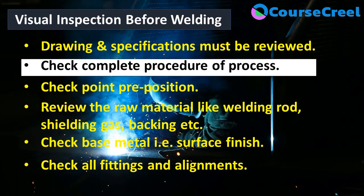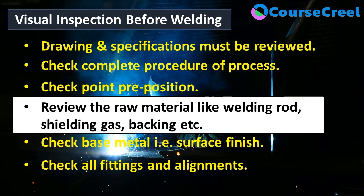The second step is to check the complete procedure of the welding process — what kind of welding process we are going to perform and what steps are necessary, such as gas tungsten arc welding (GTAW), gas metal arc welding (GMAW), or shielded metal arc welding (SMAW). Whatever procedure is going to be used should be thoroughly checked. The next step is to review the raw materials like welding rods, shielding gases, and backing, which must be completely reviewed before welding.